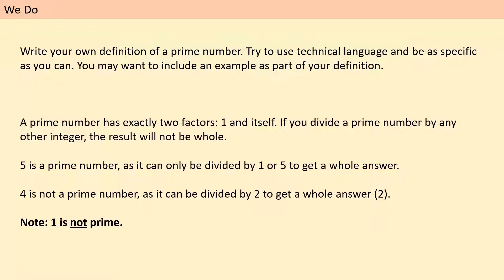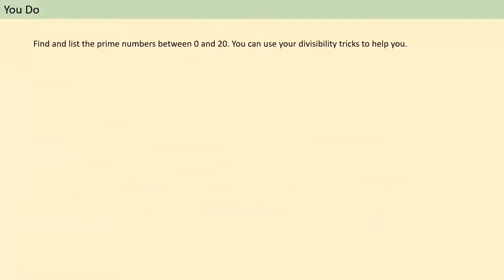Okay, now that we've got that out of the way, we know what a prime number is. Now we're going to find some prime numbers. So what I would like you to do is to find and list the prime numbers that are between zero and 20. So we know one's not going to be one of them. We just noted that down. We know how to find prime numbers now. So you're going to use your divisibility tricks from the previous lessons to help you work out which numbers are prime and which are not. Okay, a few minutes on this.